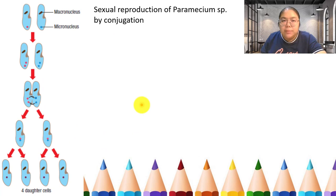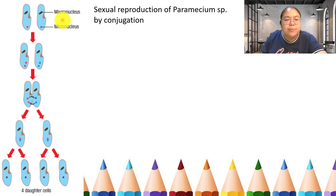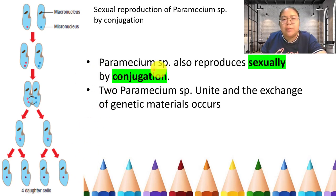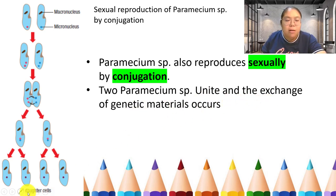Now the sexual reproduction of Paramecium uses conjugation. Conjugation is a sexual process involving exchange of gametes, followed by meiosis, producing four daughter cells — unlike binary fission which produces two. These four daughters have genetic material different from the parents. Two Paramecium species meet and exchange genetic material — this is the conjugation process.